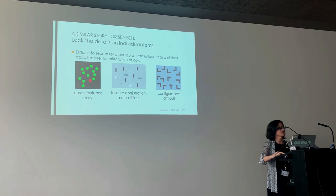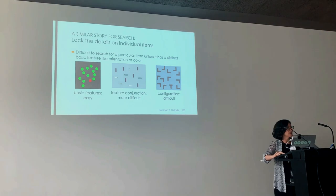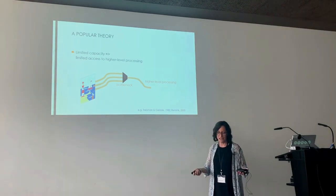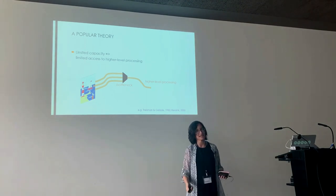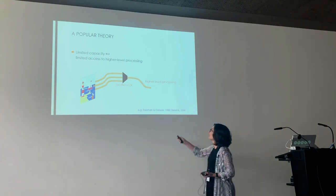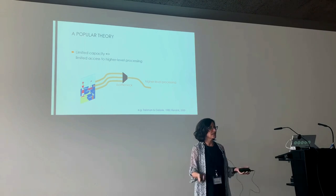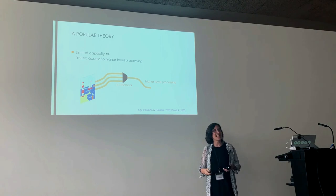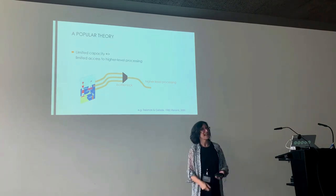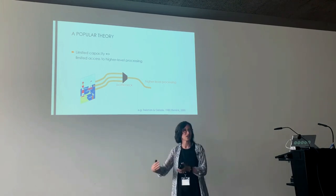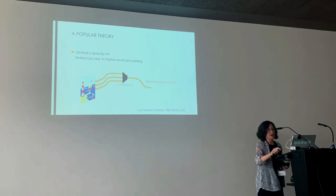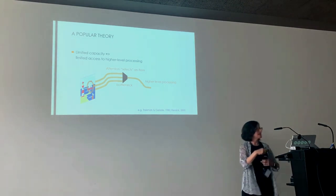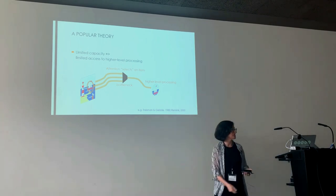The search story seemed to provide an explanation for why you're so bad at the details. Treisman and Gelade argued that search is often hard because you have limited capacity — specifically, limited access to higher-level processing. They thought of it like a train station: you have one track going east to west, and a bunch of tracks coming in. Something they call attention selects an item, sends it through the station, and then you get to do higher-level processing, recognize it's a boat, and so on.